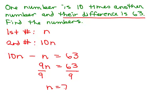What does that give us? 10n minus n is 9n, and then we can divide by 9. So n is 7. That means, if n is 7, the first number must be 7, and the second number would be 10 times 7, which would be 70.